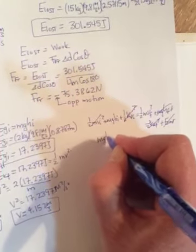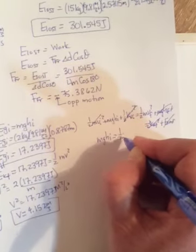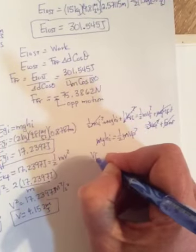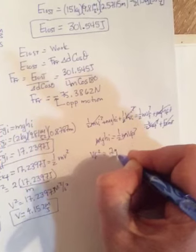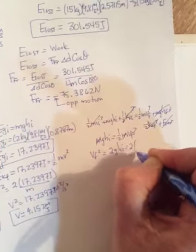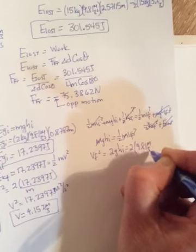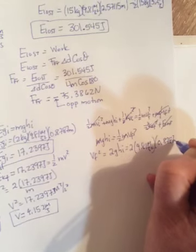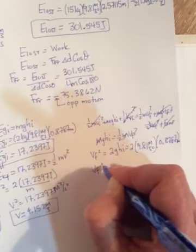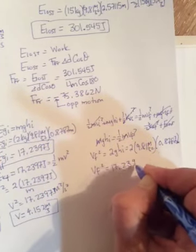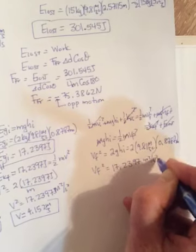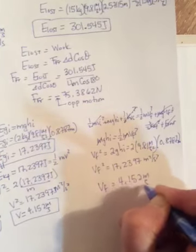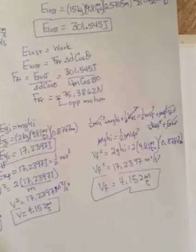So you're just left with mgh initial equals 1/2 mvF squared. m's will cancel. You're solving for vF squared. Take the 2 over, 2gh initial. 2 times 9.81 meters per second squared, times the 0.8787 meters. And you get a vF squared of 17.2397, et cetera, meters squared per second squared. Take the square root and get 4.152. So you get exactly the same answer whichever way you do it.